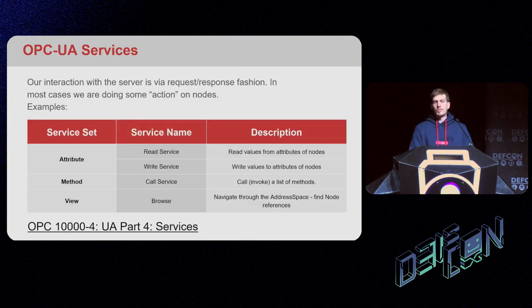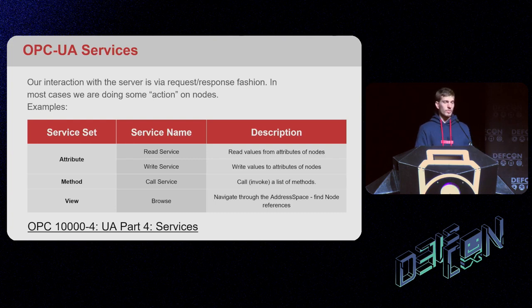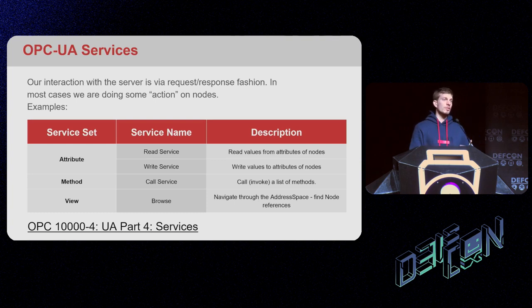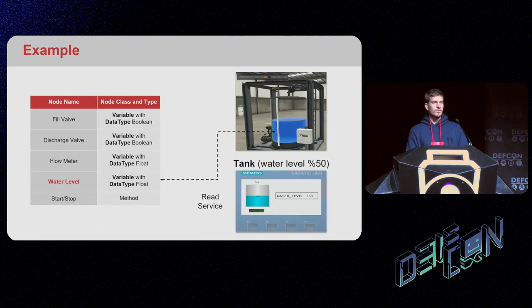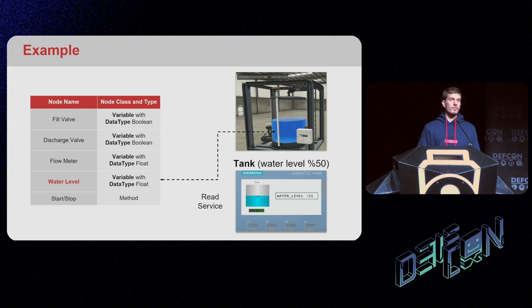In OPC UA we also have the concept of services — our way of interacting with the server. We can activate different services on different nodes. For example, to read a variable or tag we use the read service; to write to it we use the OPC UA write service. To implement OPC UA you need to implement a lot of these services. In our water tank example, the HMI continuously reads the water level variable using OPC UA's read service.